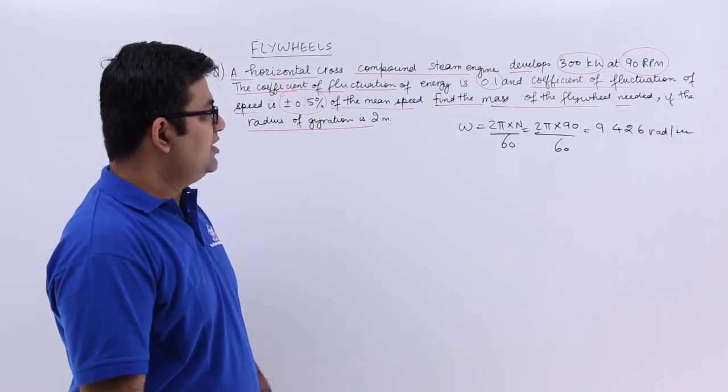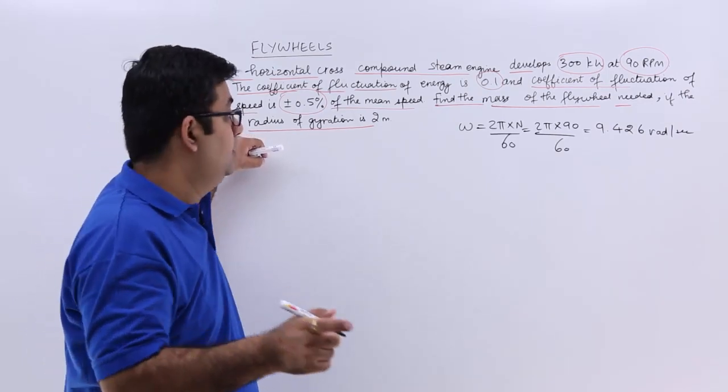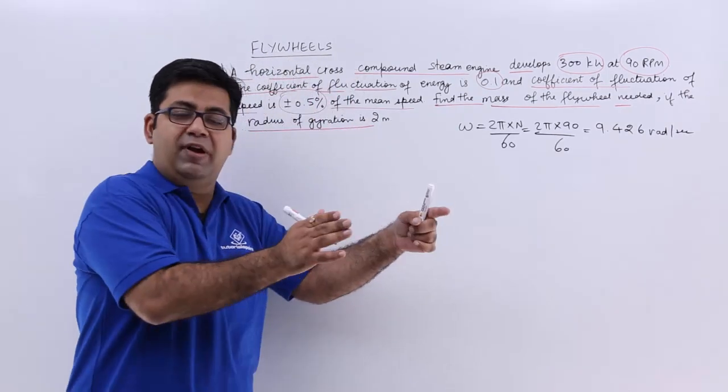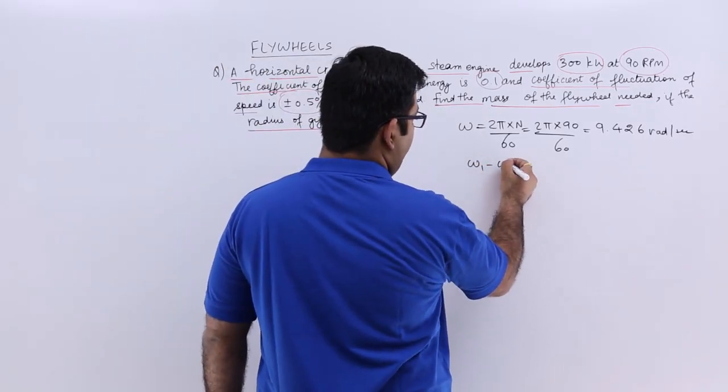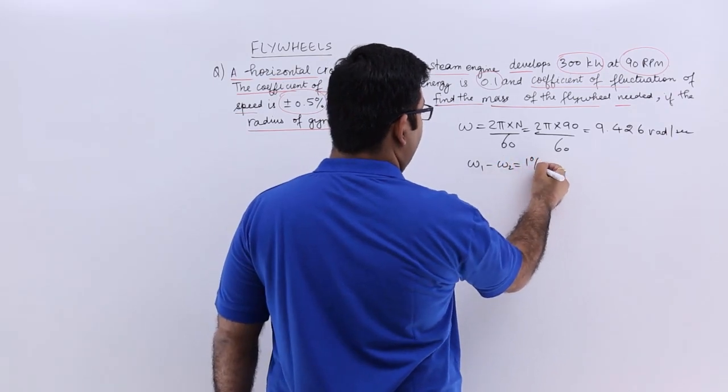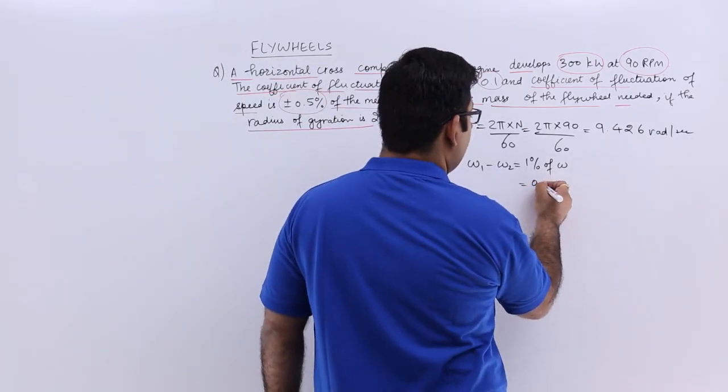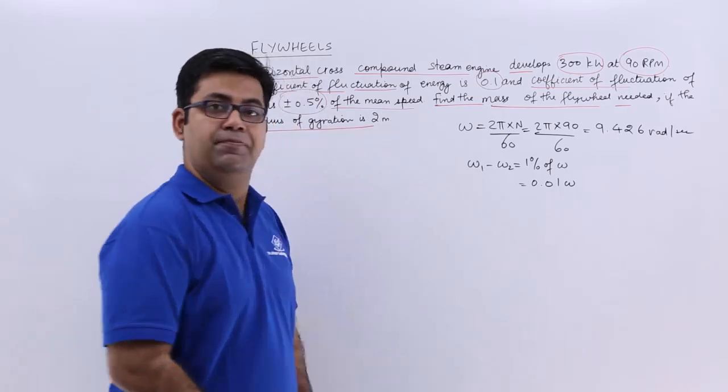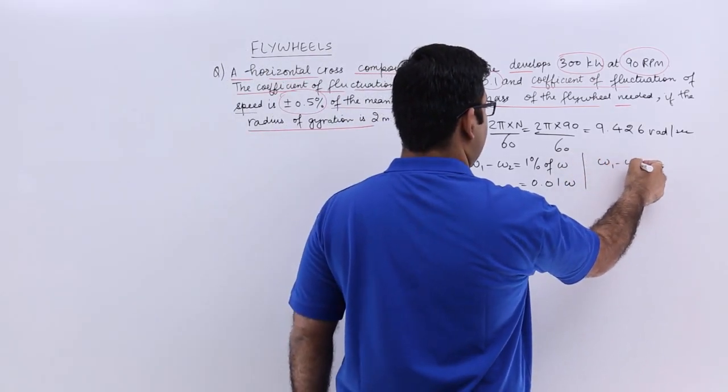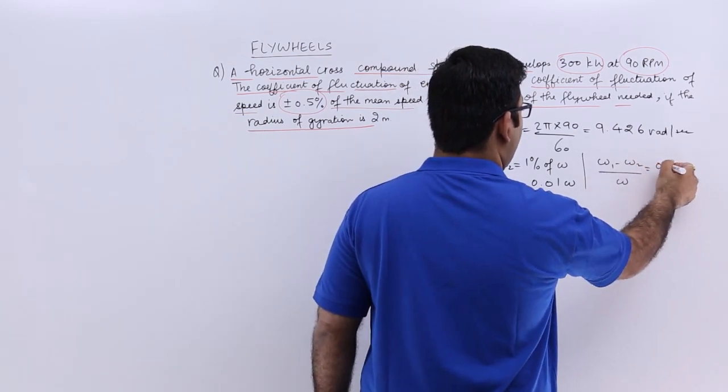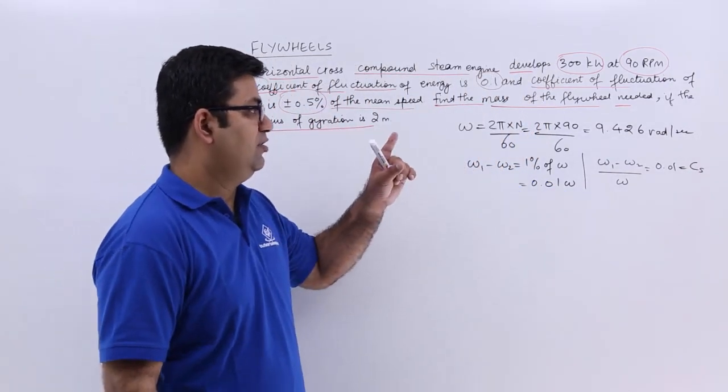Now the coefficient of fluctuation of speed is plus minus 0.5%, a total of 1%. So plus 0.5 minus minus 0.5 equals 1. So omega 1 minus omega 2 is 1% of omega, that is 0.01 times omega. This means that omega 1 minus omega 2 by omega equals 0.01, which is the coefficient of fluctuation of speed.